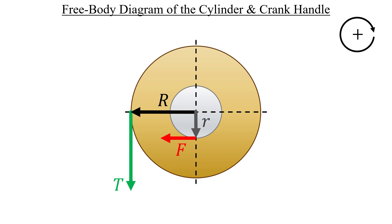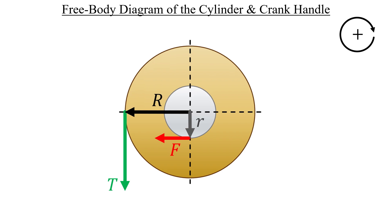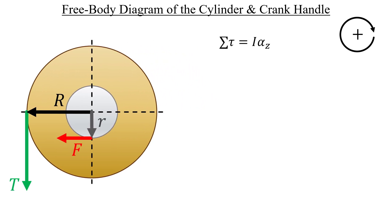So everything that we need is identified and we're ready to use the sum of torques equation next. That sum will contain two terms. A positive torque on the handle due to F and a negative torque on the cylinder due to the tension. And this is based on the rotational direction that I've defined in the top right corner.